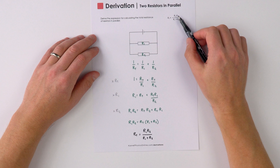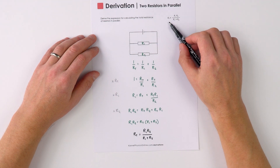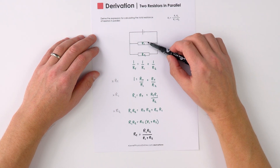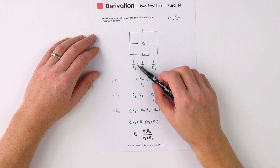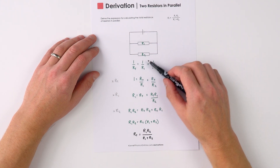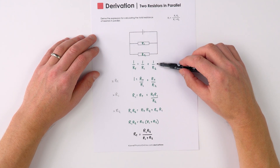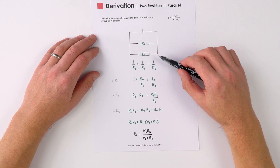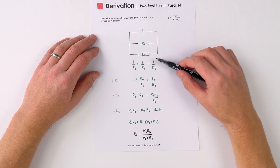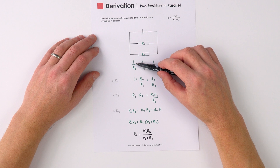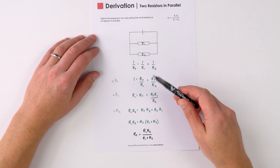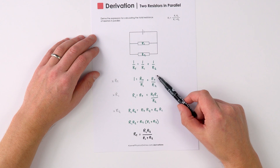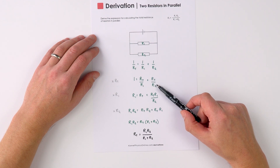This is a quick way to derive this equation, looking at the total resistance of two resistors which are in parallel. We know that 1 over RT is equal to 1 over R1 plus 1 over R2, from our equation for resistors in parallel. If we multiply everything by RT, we get 1 equals RT over R1 plus RT over R2.